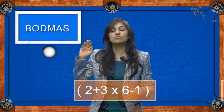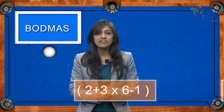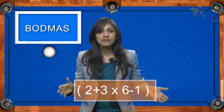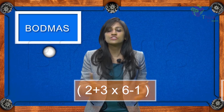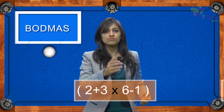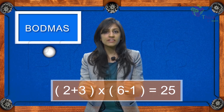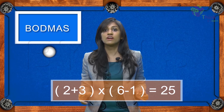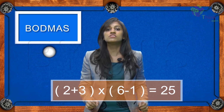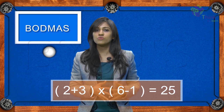Because in BODMAS, you need to do multiplication before you do addition or subtraction. It's pretty clear. If you are posed a question without any brackets, like in the original question, you follow the order where you do the multiplication first before the addition and subtraction. But if the brackets tell you another story — if the brackets are around the addition and the subtraction —